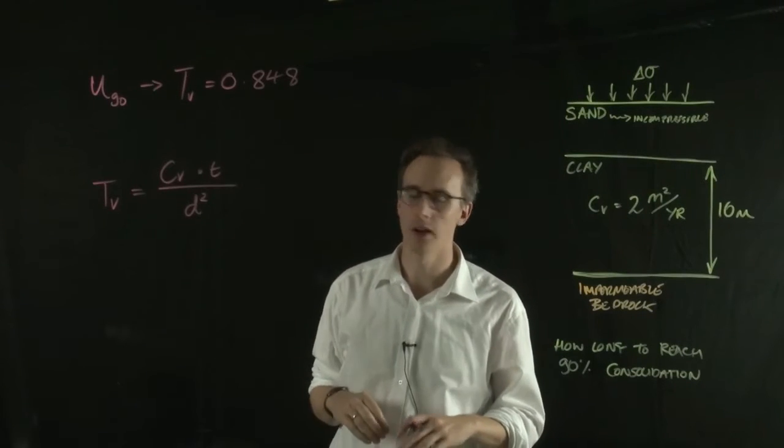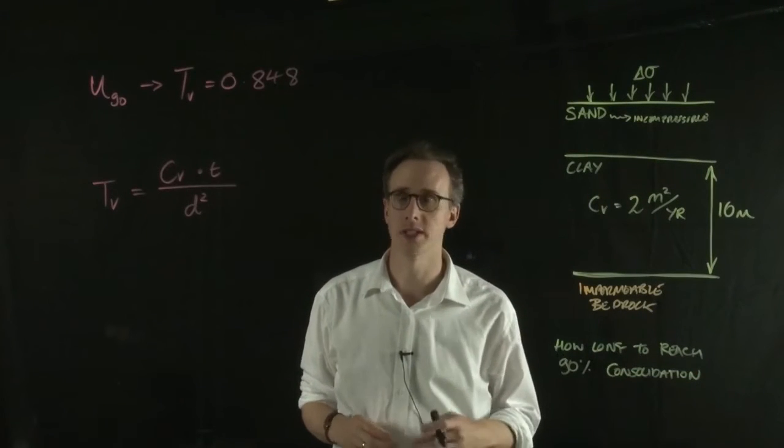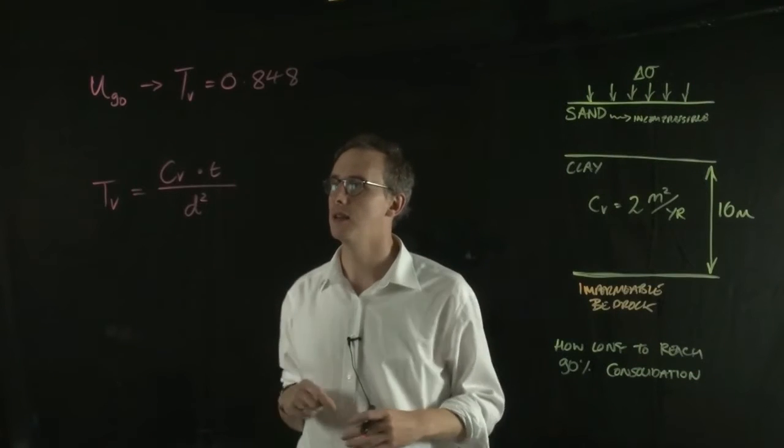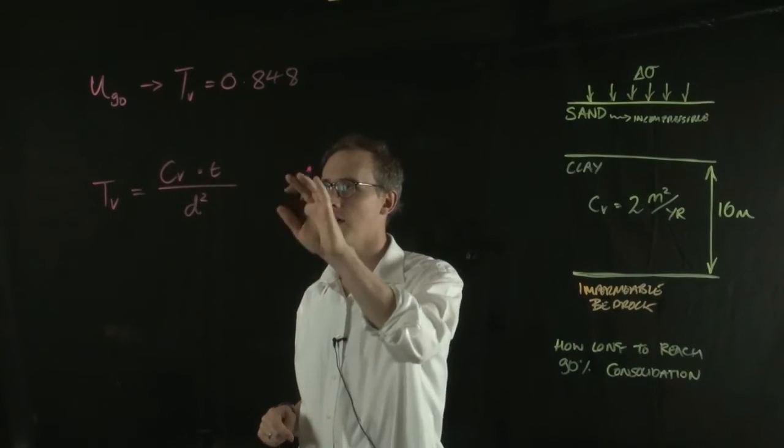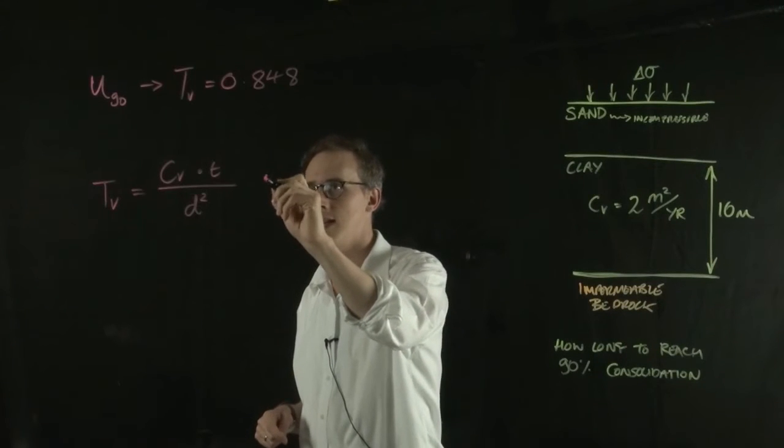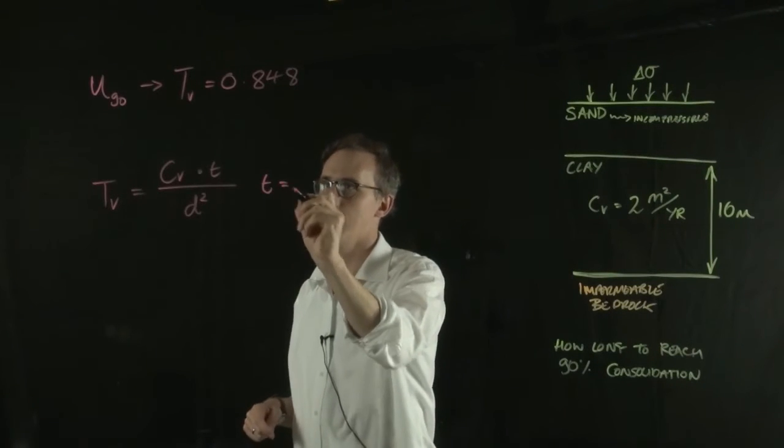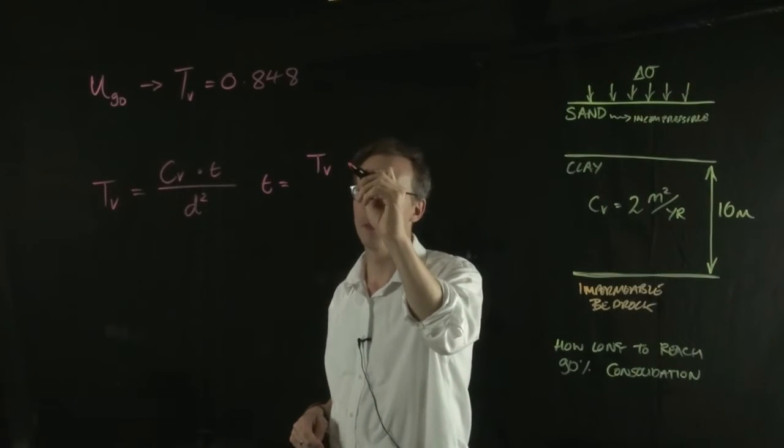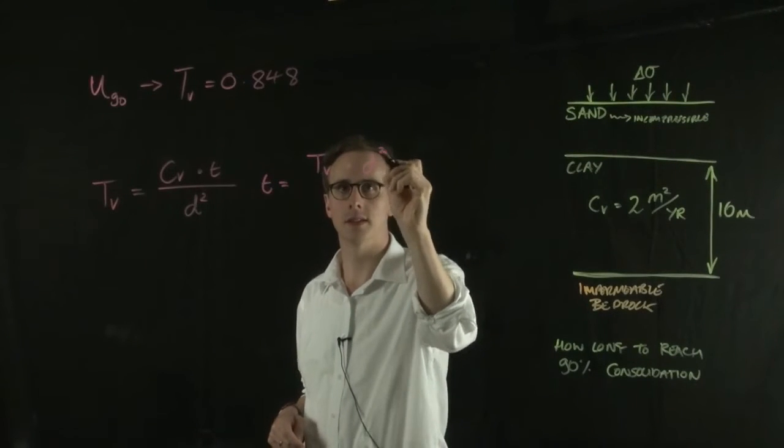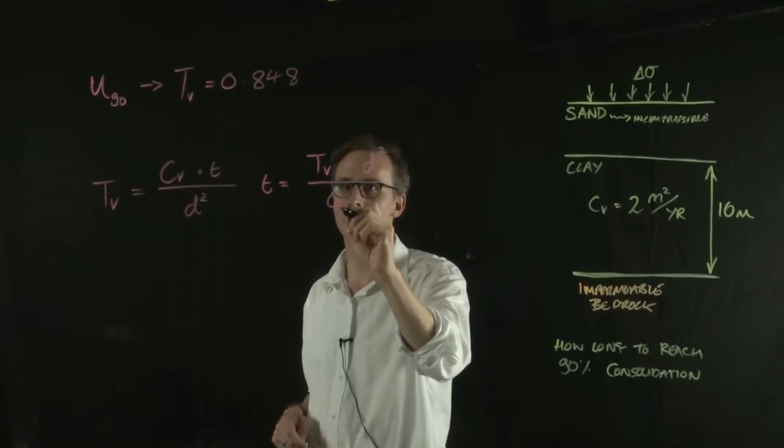What we're interested to find out, or the question is asking us, is what is T within this. So what we need to do is rearrange this equation in terms of T. So T is equal to your TV value multiplied by D squared all over CV.